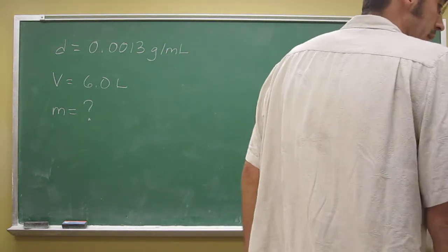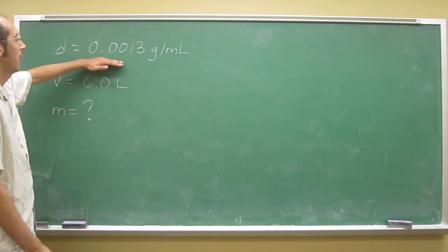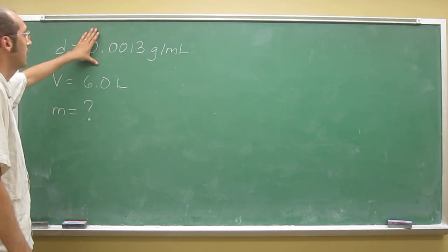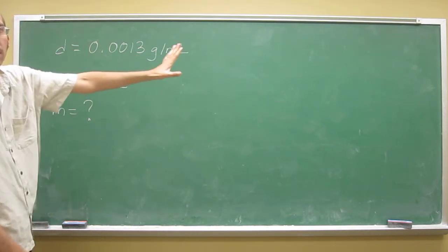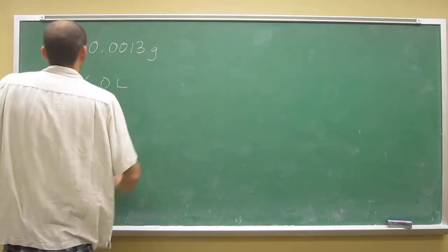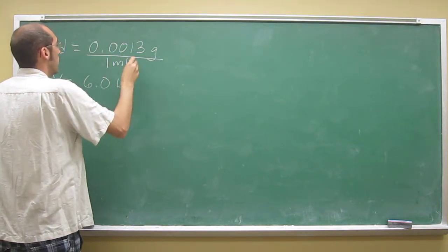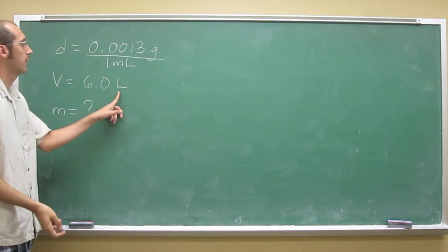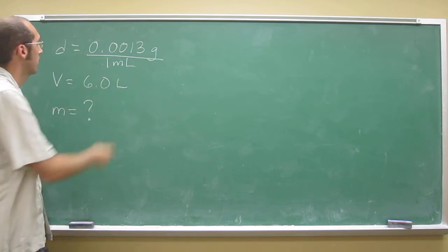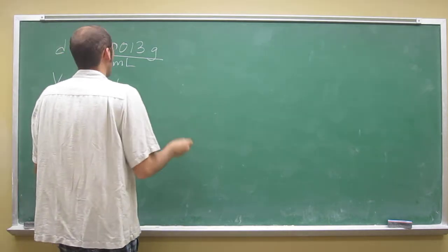Of 6 liters of a sample of air. Okay, well remember, this is not the way we want to write the density if we're trying to use it in a problem. So let's just go ahead and rewrite it real quick for 1 milliliter. And notice, liters and milliliters won't cancel out with each other, so we're going to have to convert this to liters or this to milliliters, whichever way you prefer.